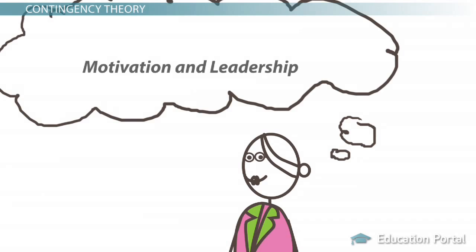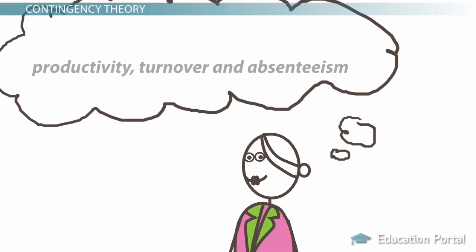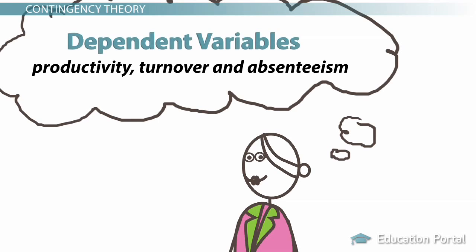Motivation and leadership are just two examples of many independent variables of the contingency theory, while productivity, turnover, and absenteeism are some examples of dependent variables.